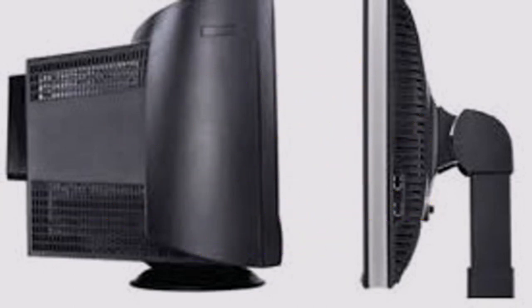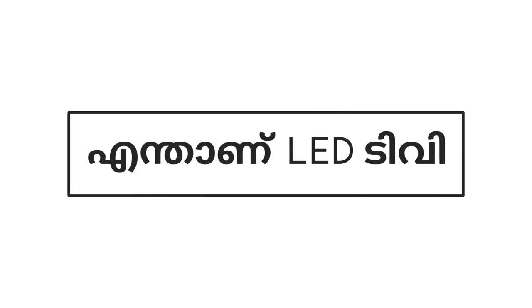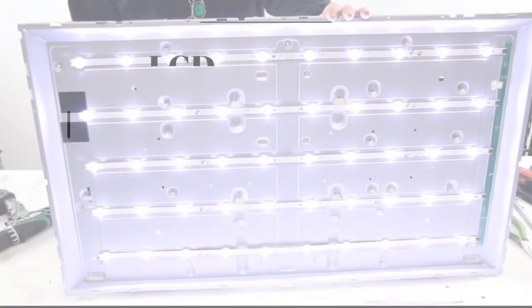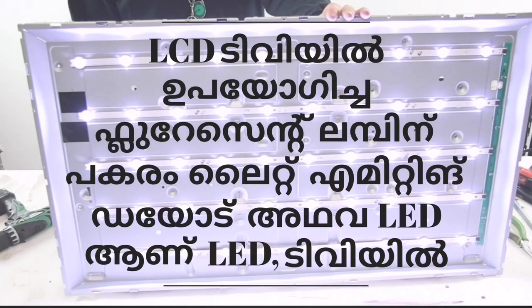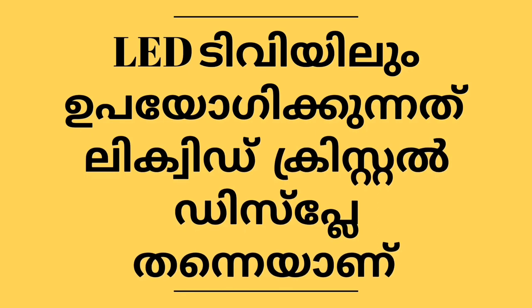If we look at the LED TV, you want to see the LED light. LCD TV uses a fluorescent lamp like CCFL, while LED — Light Emitting Diode — is used in LED TV. LCD TV uses a liquid crystal display.